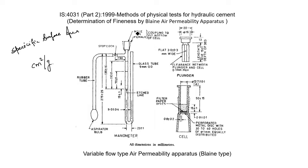By using this test we can find the fineness of cement, and IS 4031 Part 2 gives the detailed procedure of this test.